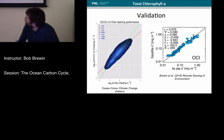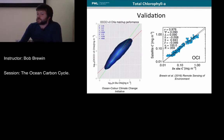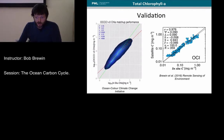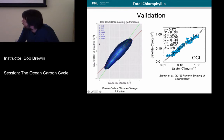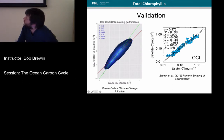As with any ocean colour product, it's very important to do validation — we want to know how accurate and precise these satellite observations of chlorophyll are so users can make informed decisions. This plot from the Ocean Colour Climate Change Initiative shows in-situ chlorophyll on the x-axis versus satellite estimates on the y-axis, with about 14,582 match-ups. The root mean square error in log space is about 0.3, which meets many user requirements for total chlorophyll.